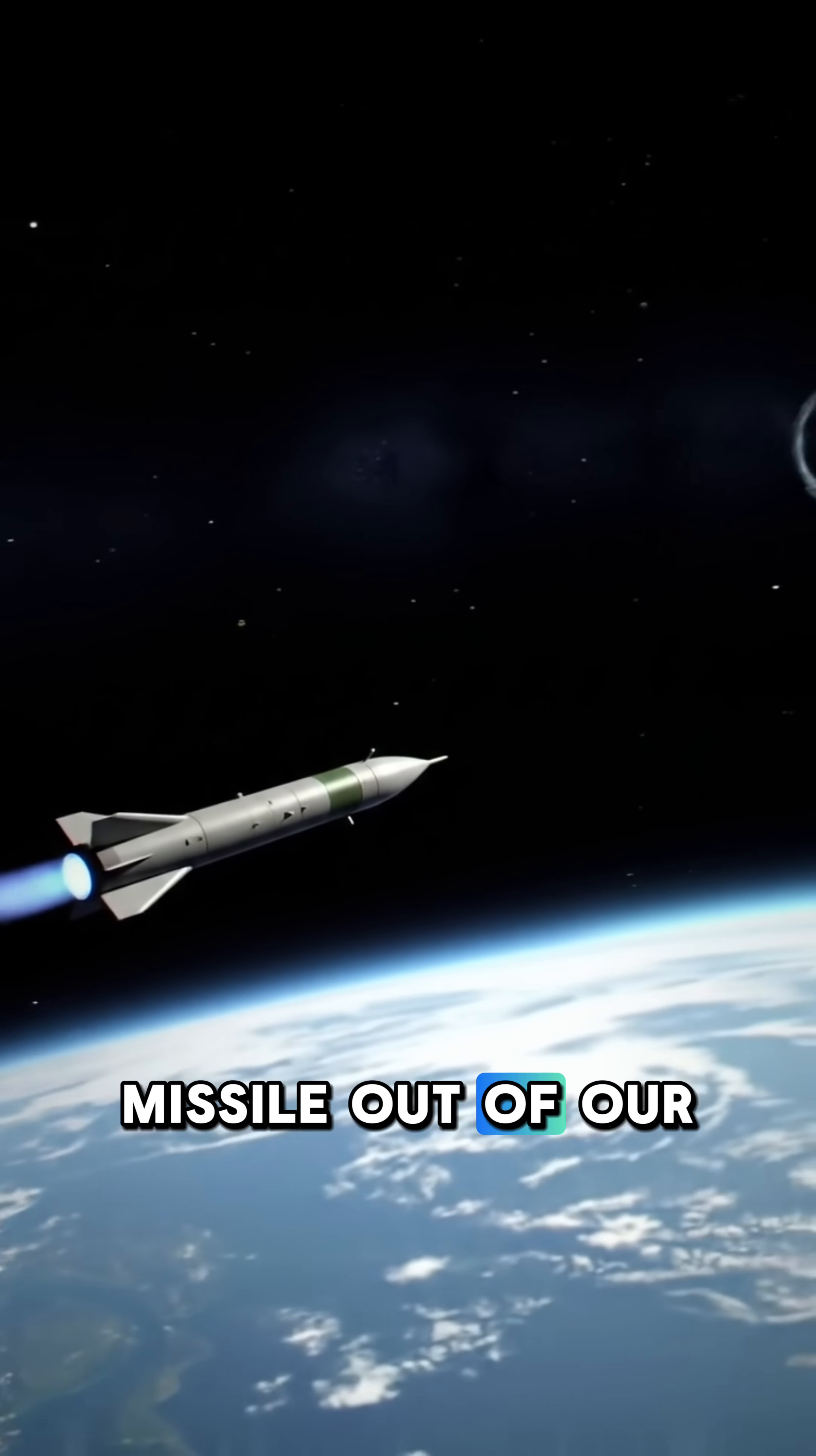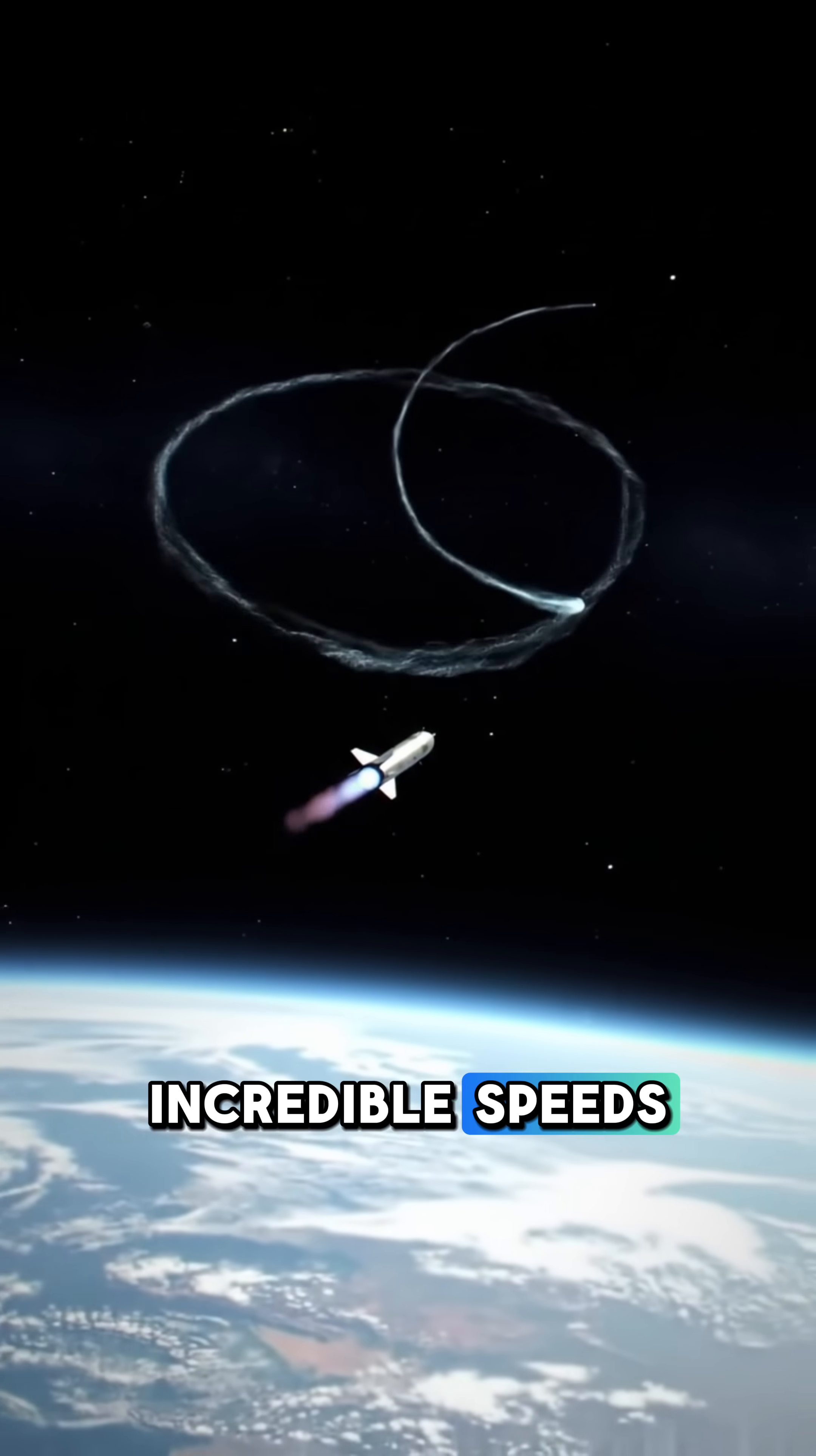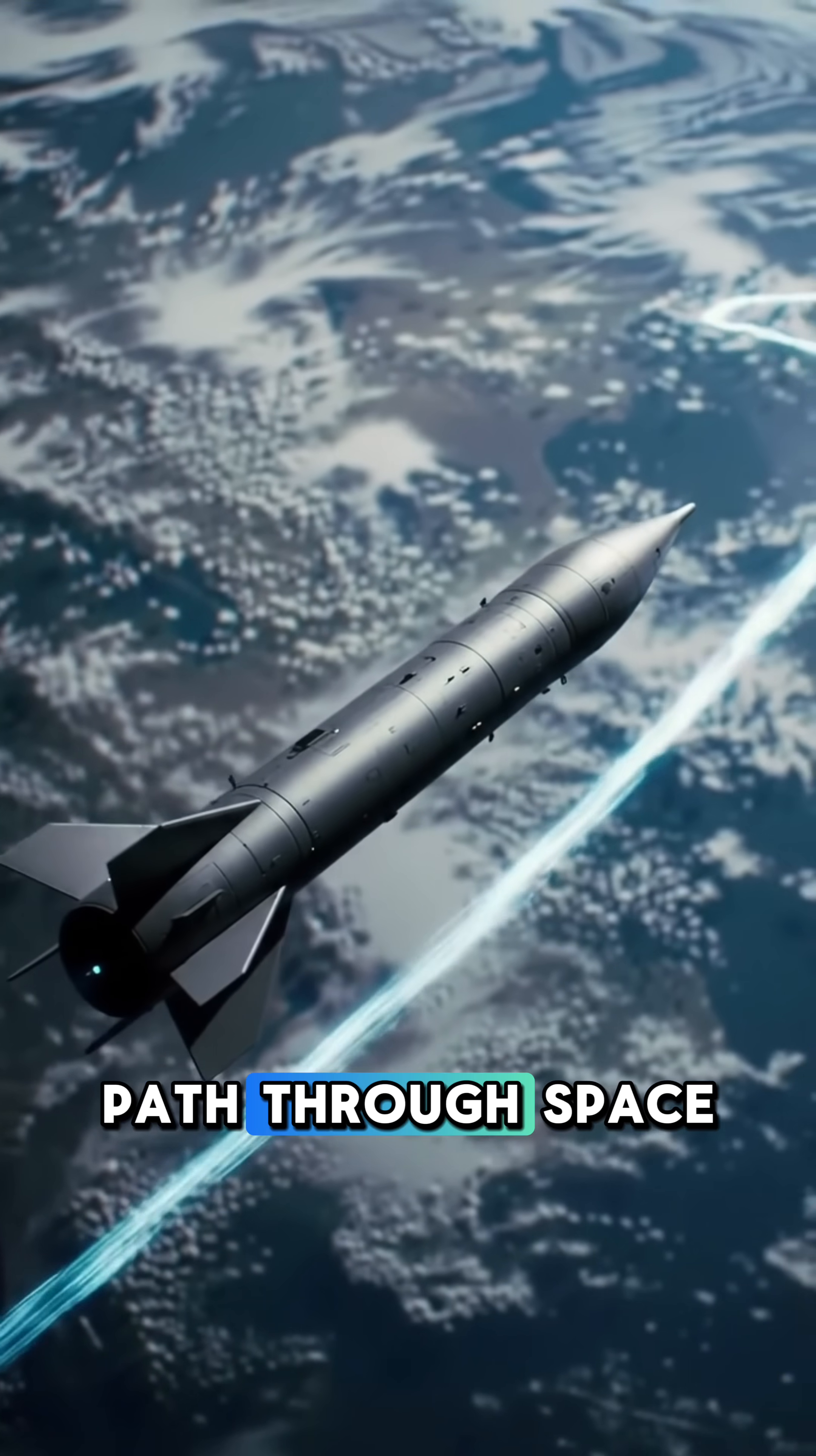Rockets blast the missile out of our atmosphere and into space, pushing it to incredible speeds. Then its engines cut off. It flies unpowered, following a precise, pre-set path through space.